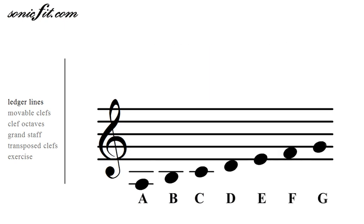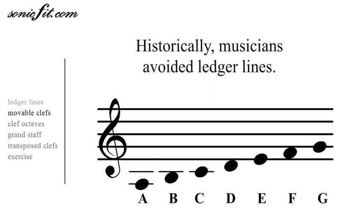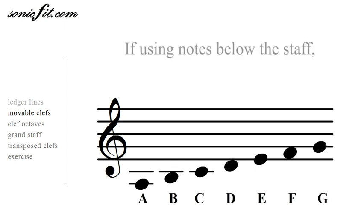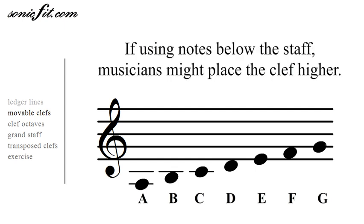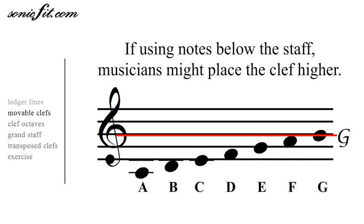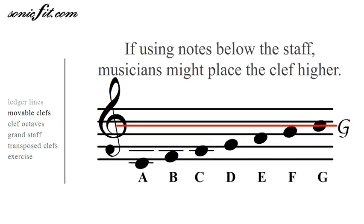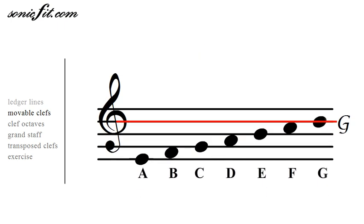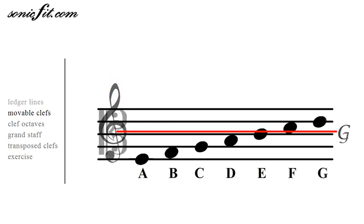Previous to 100 years ago, musicians avoided using ledger lines. If using notes below the staff, they might place the clef higher, moving all the notes up accordingly. Or they might use a different clef.